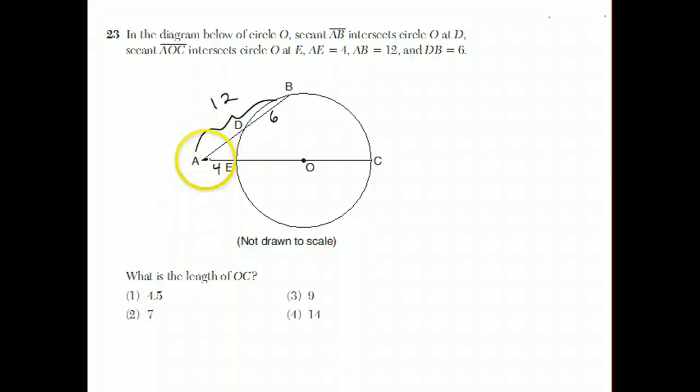The outside piece of this secant line has an inner part and an outer part. The length of the outside piece multiplied by the entire secant line should be equal to any other outside piece times any other complete secant line.